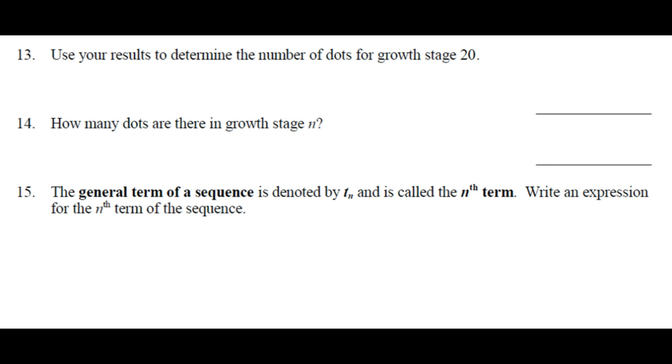Use your results to determine the number of dots for growth stage 20. So what are we going to do? Number of dots will be 20 times 7 minus 1. 139. How many dots are there in growth stage n? 7n minus 1, right? Perfect. Number of dots, d is equal to 7n minus 1.